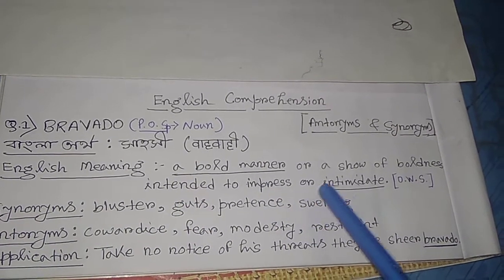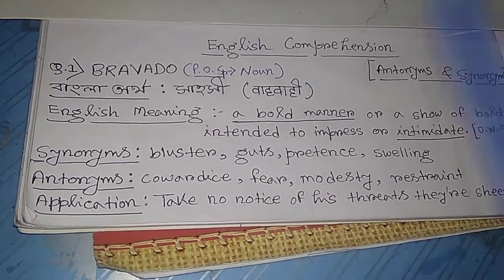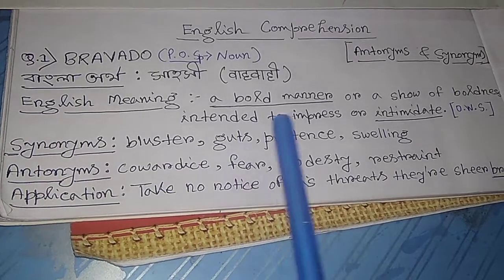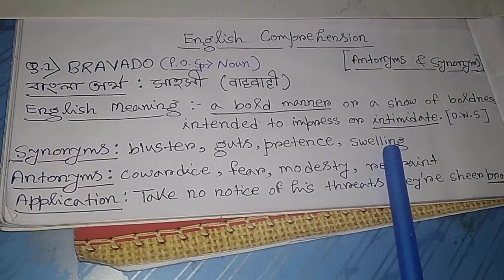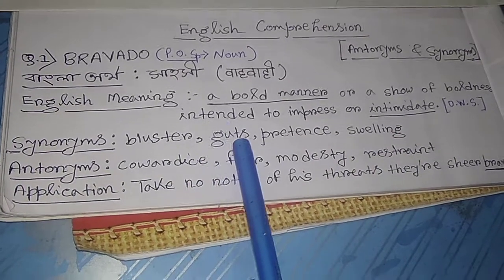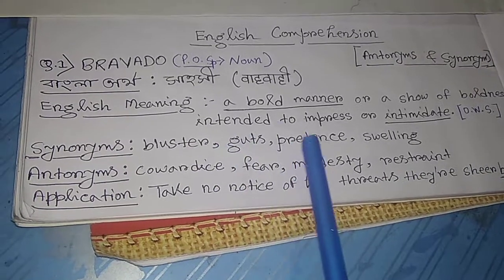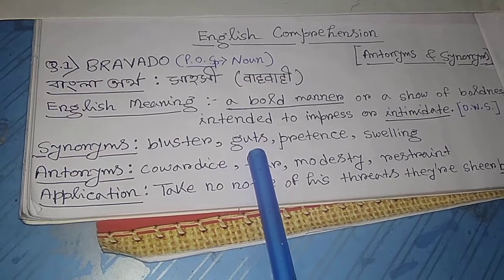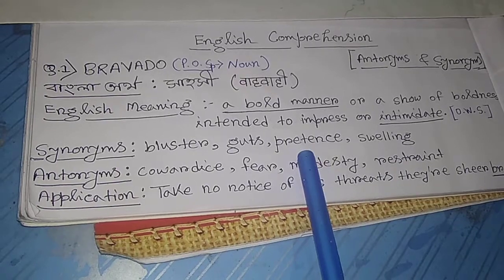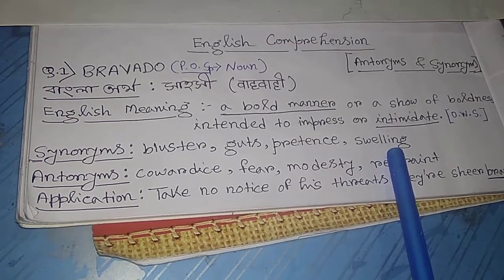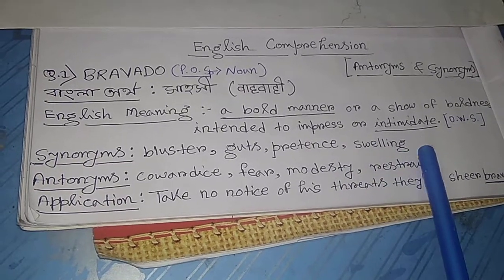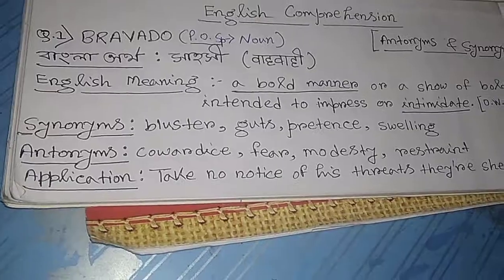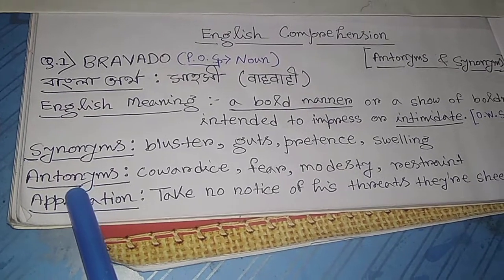Synonyms of bravado are: bluster (B-L-U-S-T-E-R), guts (G-U-T-S), pretence, and swelling (S-W-E-L-L-I-N-G). Please note all word spellings for spelling correction. All of these indicate the synonyms of bravado.